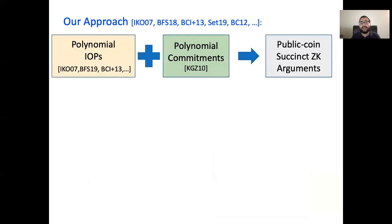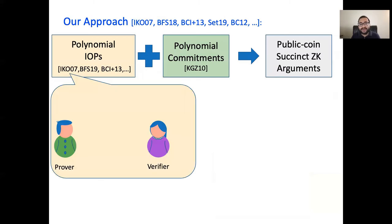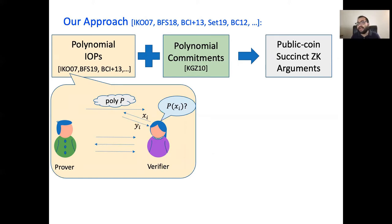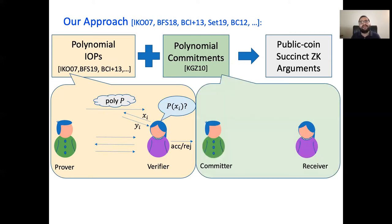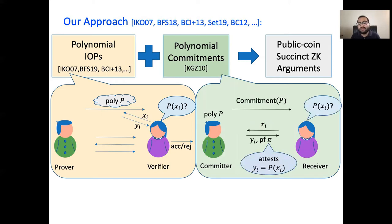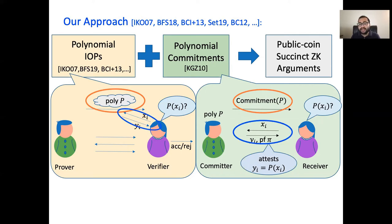At a very high level, our approach is to combine polynomial IOPs along with polynomial commitments. Polynomial IOPs are information-theoretic proof systems where the prover sends an oracle in the first round which embeds a polynomial, then interacts with the verifier, at the end of which the verifier asks for evaluations of this polynomial and accordingly accepts or rejects. Polynomial commitments, on the other hand, are cryptographic tools that allow a committer to commit to a polynomial and later reveal evaluations on verifier-chosen points, along with a proof that it has correctly evaluated the polynomial. We combine these two tools in the most natural way: we ask the IOP prover to send a commitment rather than the oracle, and we replace the IOP verifier queries to the oracle with the evaluation protocol of the polynomial commitment scheme.